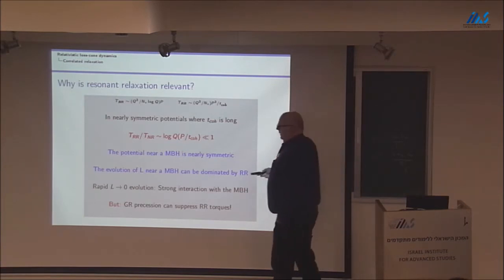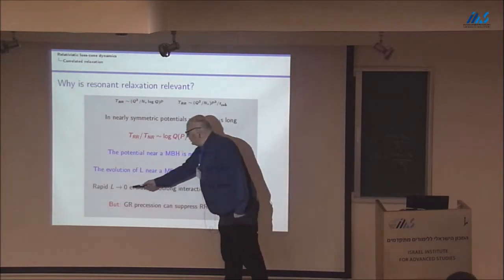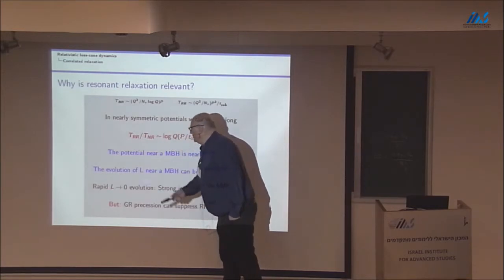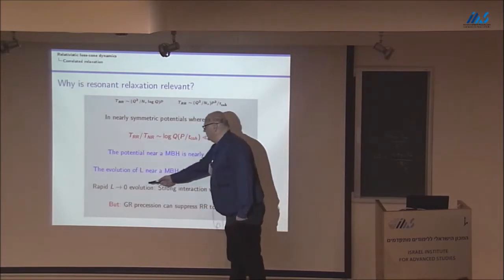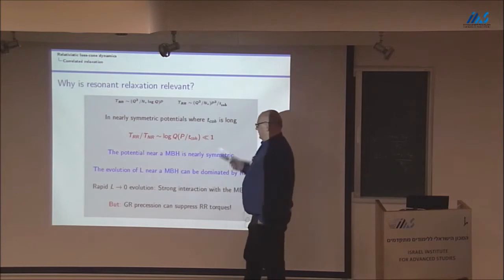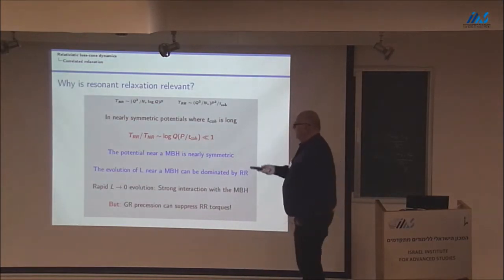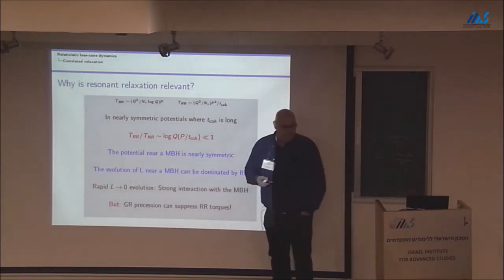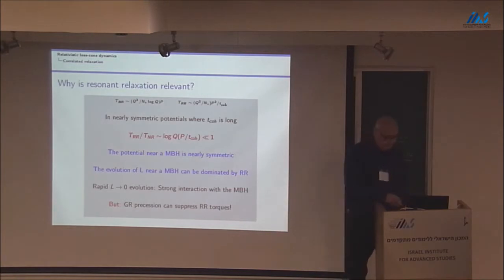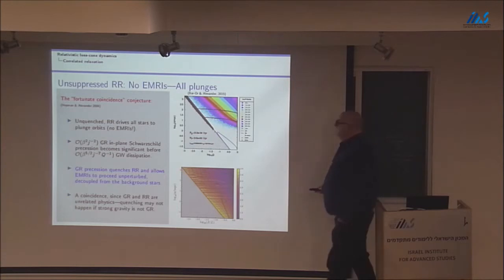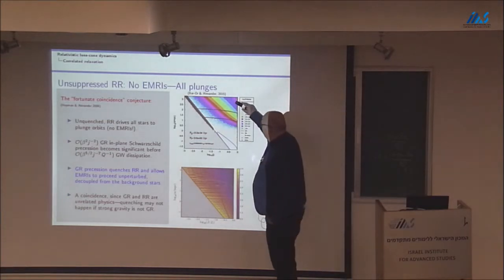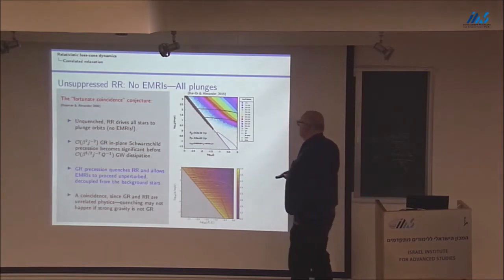In fact, if it weren't for relativistic effects, this would actually have profound implications for inspire-like events. So, what you see here is a Monte Carlo simulation that is based on diffusion coefficients that are very briefly discussed in a few slides. But for now, this is the same phase space as I showed in the schematic plot, slightly more accurate here.